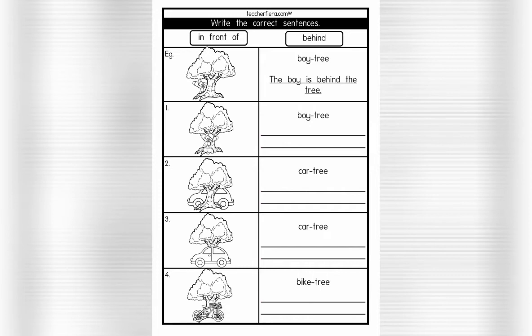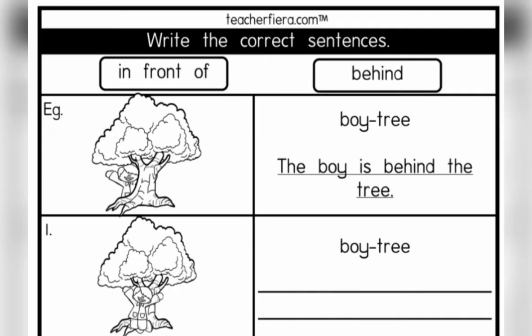Now let's try to write sentences using 'behind' and 'in front of'. Please look at the first example. We have boy-tree. The boy is behind the tree.